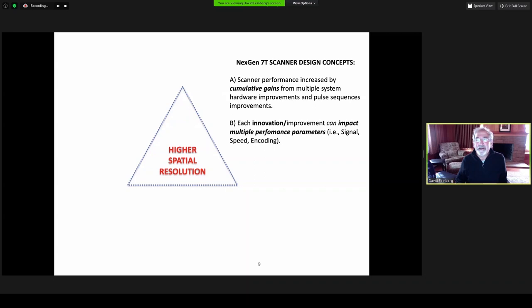I want to go over some basic design concepts. First is that the scanner performance is increased by cumulative gains from multiple different hardware improvements and pulse sequence improvements. The innovation improvements can impact multiple different performance parameters. For spatial encoding, we need more signal to support the higher resolution and also much higher acquisition speeds because we're dealing with larger data matrices and more slices.